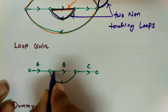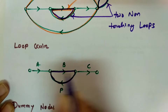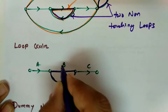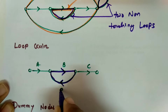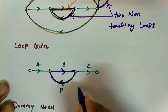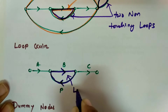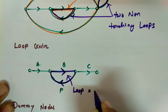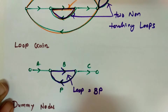Now, what is the meaning of loop gain? One can clearly see the forward gain of this link is 'b' and the reverse feedback gain is 'p'. If this is the loop, then the gain of this loop is b × p. This is the loop gain for this loop.